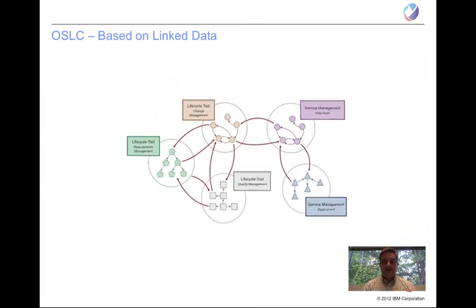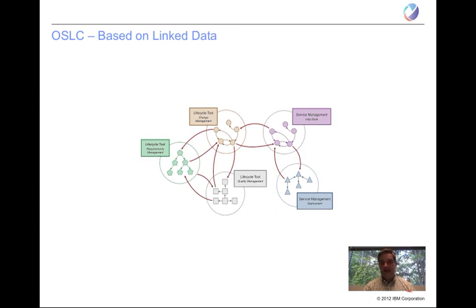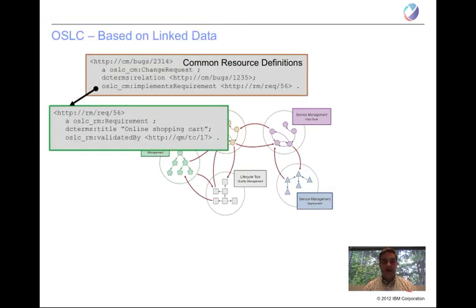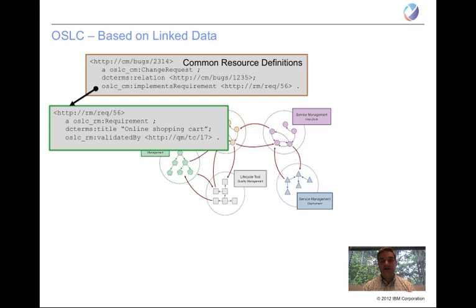As described in the linked open data cloud, there are many different vocabularies or data sources from different domains. Within OSLC, we define those vocabularies for the resources of interest to our integration scenarios. In our change management domain, for example, we have common resource definitions for what a change request is — including its URL, relationships to other change requests, and meaningful relationships to other resources, such as 'implements requirement.' Here it identifies a relationship to a requirements management system and requirement 56.